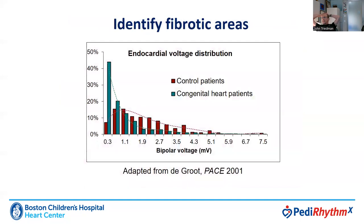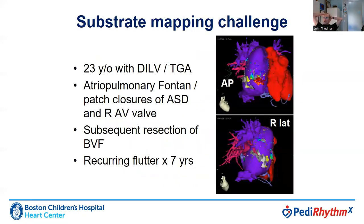We can also use data generated in part by Natasha's group in the Netherlands about the electrical correlates to fibrosis in the atrium, using voltage thresholds to indicate which parts of the atrium are densely scarred and which are relatively healthy. I'll show you one challenge where we used this approach to map the substrate of a patient before inducing and ablating tachycardia. This was a 23-year-old with a double inlet left ventricle.